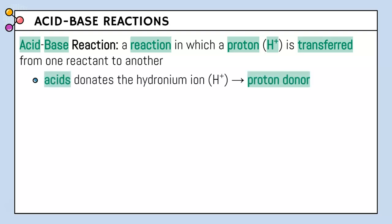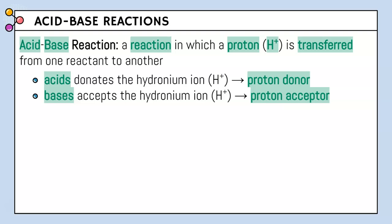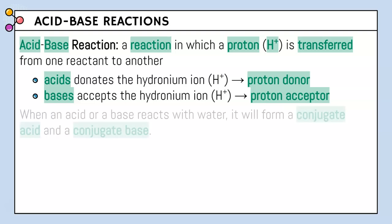Acids donate the hydronium ion, so we call those proton donors. And bases accept the hydronium ion, so we call those proton acceptors.